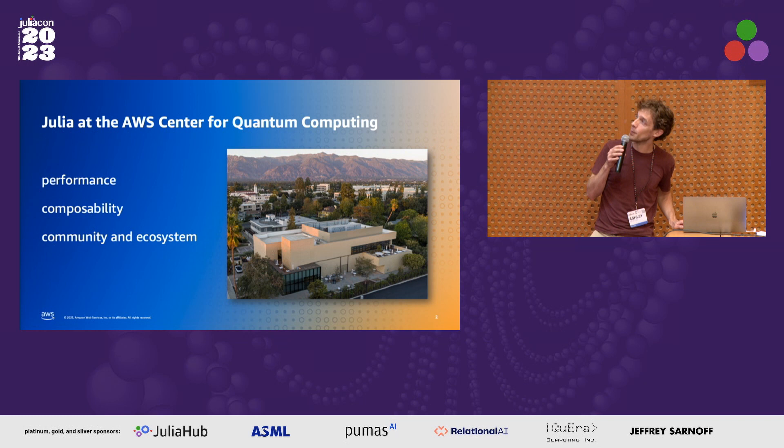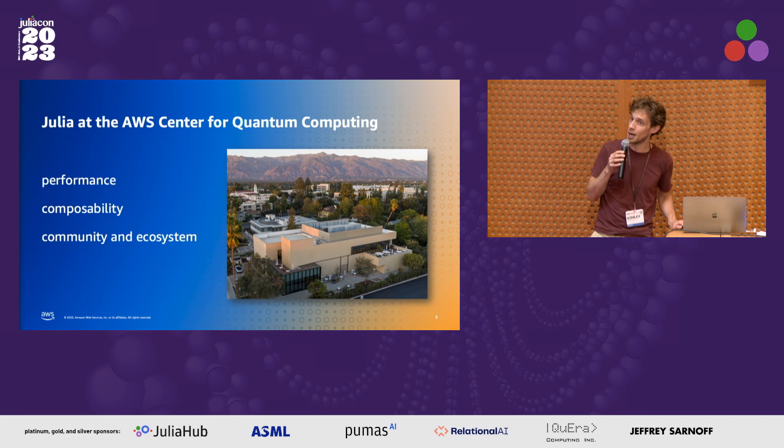We like the composability of Julia because it enables us to move pretty fast with the development of these tools. We like the community and the ecosystem — it's pretty easy to get assistance if we do encounter an issue. Julia Slack is a great place to be. And of course, the ML ecosystem is pretty awesome, and it's nice to be able to access that easily.